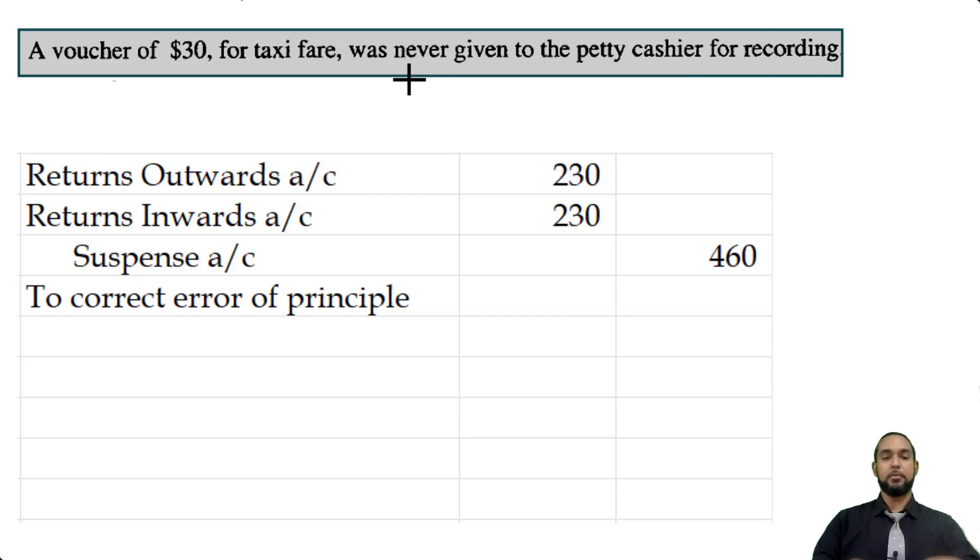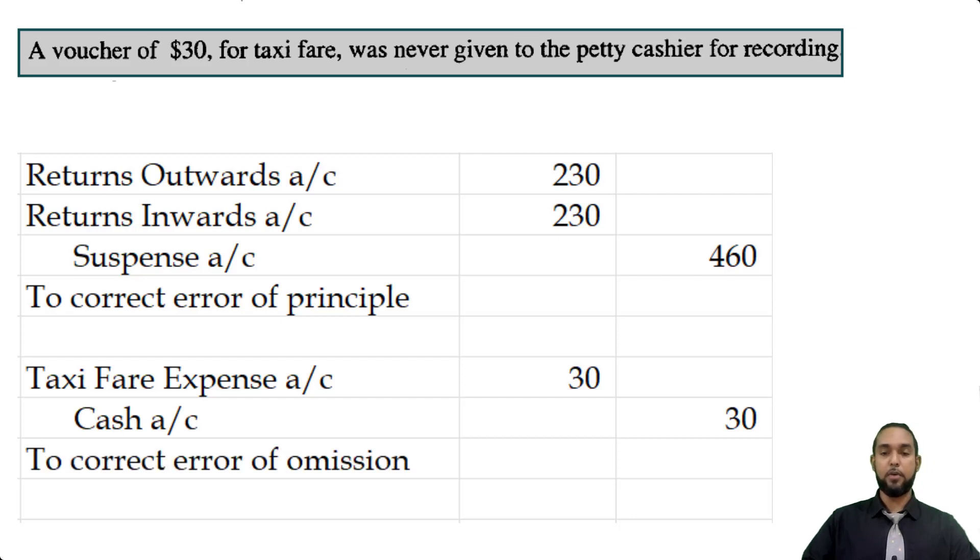So how do we fix this? So we suppose the debit and credit are both missing. So we put it in. We will debit taxi fare or traveling expenses, whatever you want to call it, because it's an expense. It was incurred and paid. So you should have debited it. And we'll credit petty cash or cash because we're paying money out of that. There are assets. And when they decrease, you have to credit the asset account. So, taxi fare expense, cash, error of omission.